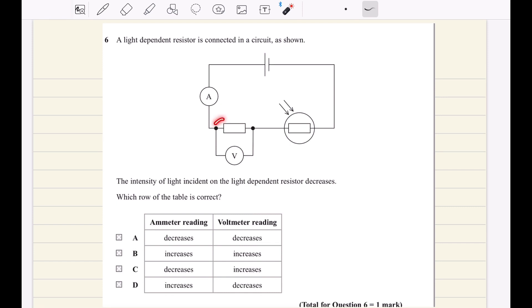So the correct answer for question six is A. The ammeter reading decreases and the voltmeter reading decreases as well. See you next video.